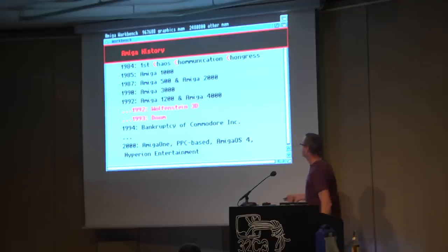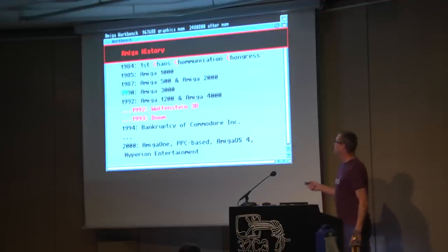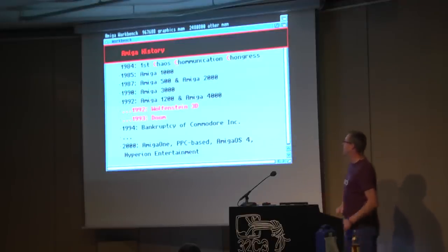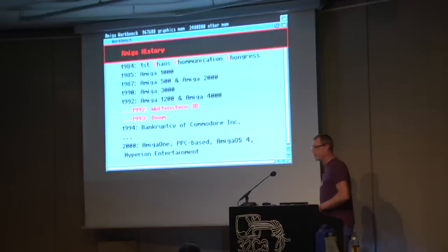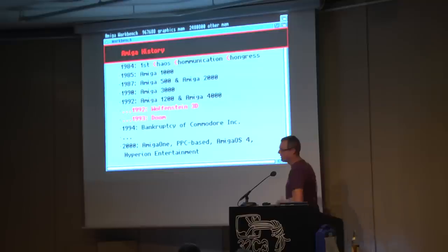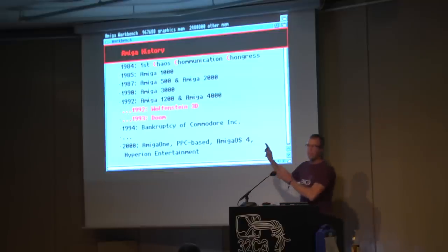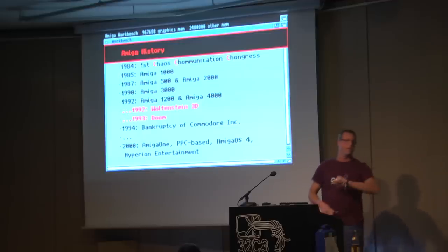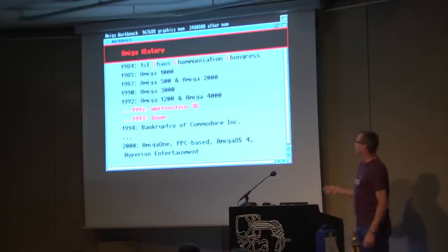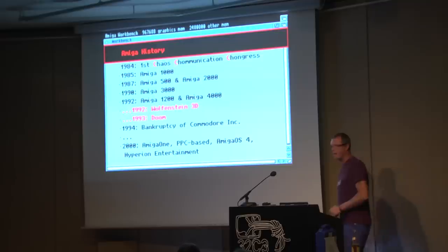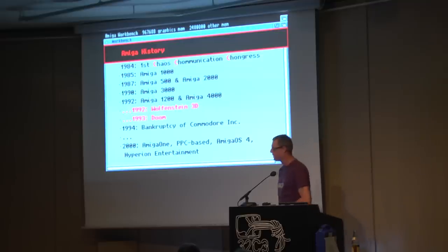Many years later, in 1990, appeared the Amiga 3000 model. Then later some other models, like the 1200 — which appeared in 1992 — and the Amiga 4000 model.